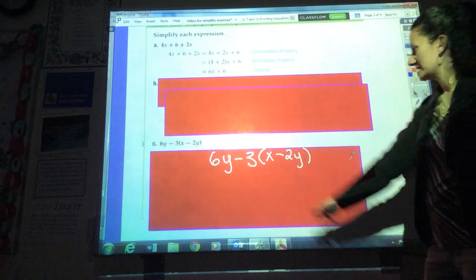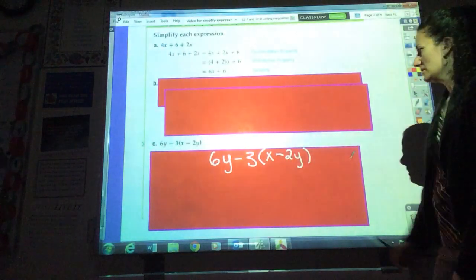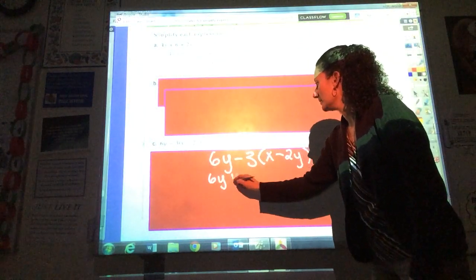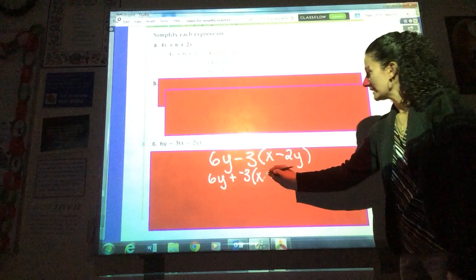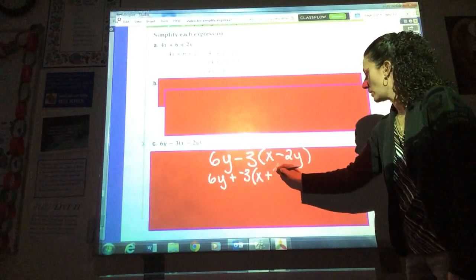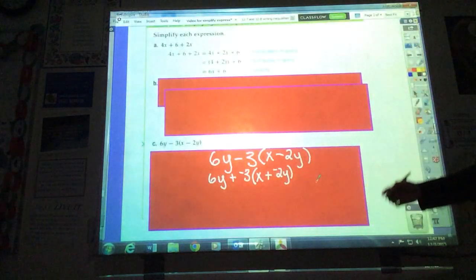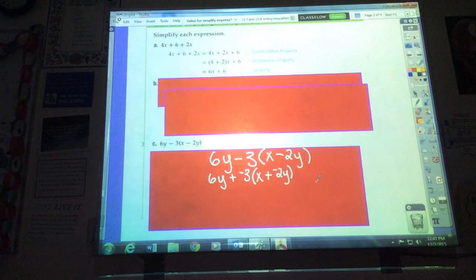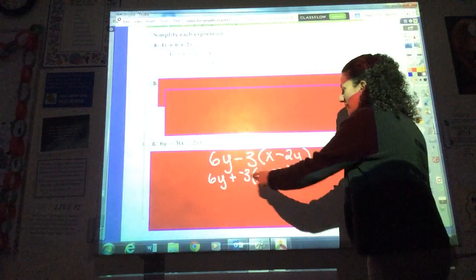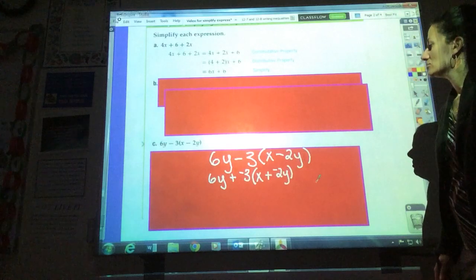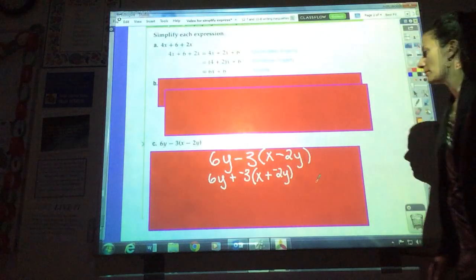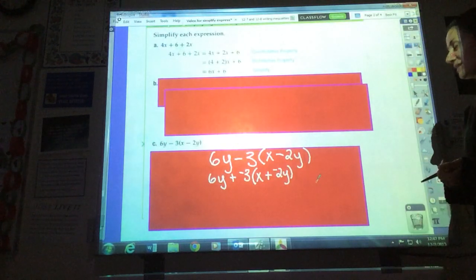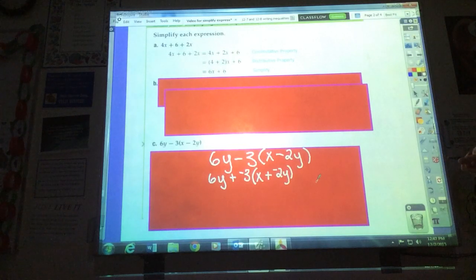First thing I'm going to do is I'm going to rewrite it with all addition. So I'm going to rewrite it as 6y plus negative 3 and parentheses x. I'm going to make that addition and make that 2y negative. This is not an essential step, but it is going to help me avoid silly mistakes later. One of the most common mistakes is kids just not paying attention to the negative. So I like to take this step of making any subtraction addition and changing the sign of the number right behind it. Our next step in this case is going to be to use the distributive property.